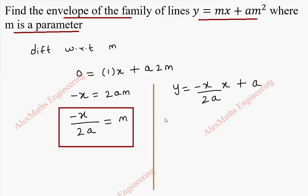So a into m square will become x² by 4a². So we can cancel this a and this square, so we're left with 4a.